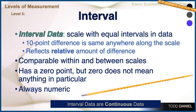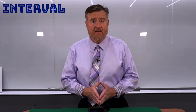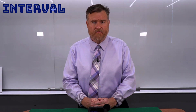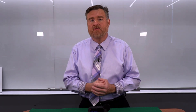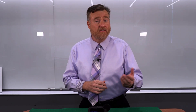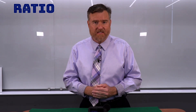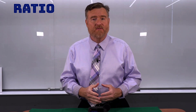Interval level data are always numeric — we cannot calculate the mean of letters or do other analyses with colors. We must have numeric data in an interval scale. Interval level data are always continuous data, meaning they can answer the questions like how many and how much. There's another type of data that can answer those same questions, but there is one difference between interval and ratio level data: the presence of the absolute zero.